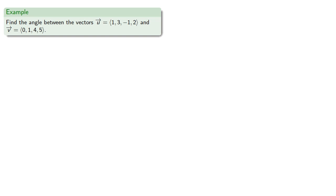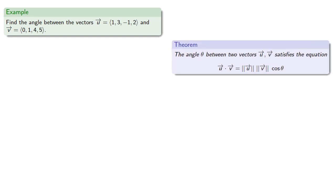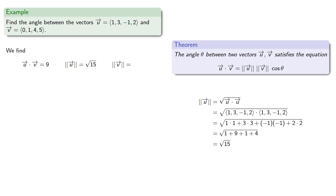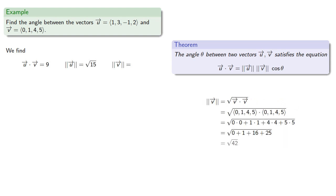So given two vectors, let's find the angle between them. So our theorem says we need to find the dot product and the norms of the two vectors. So our theorem tells us the angle theta satisfies the equation, which we can solve for theta and find.